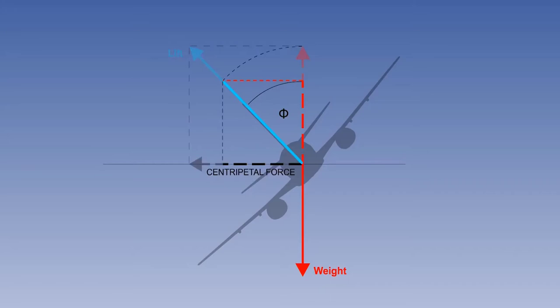If the aircraft is banked and the angle of attack is maintained at the same value as in straight flight, the vertical component of lift would be insufficient to balance the weight and the aircraft would descend.